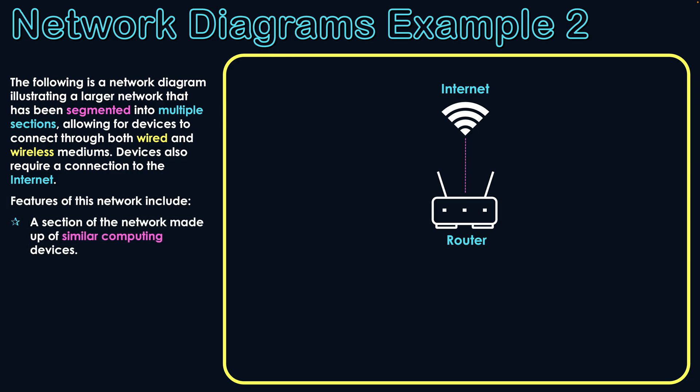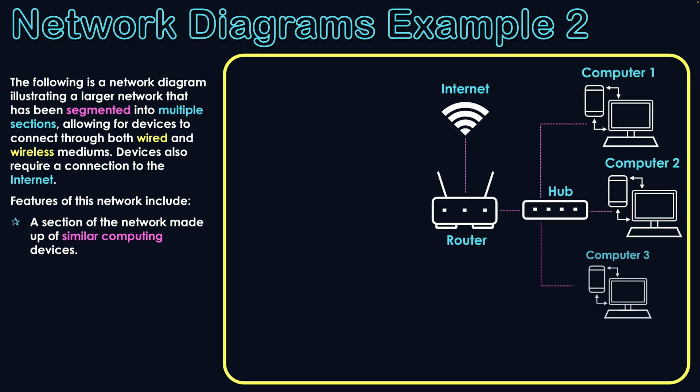Here are the different scenarios that are going to be part of this network. Firstly, there's a section of the network made up of similar computing devices. Since they're all similar and just sharing data generally, a hub can be used in this instance. Hubs connect multiple devices of the same type, all using a single communication channel. A bunch of desktop computers are connected to the hub, forming a section where data is shared freely among those computers.